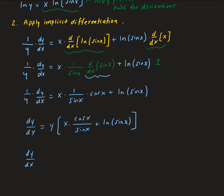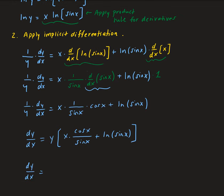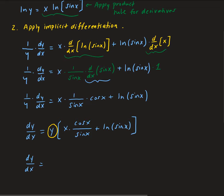We can write our derivative entirely in terms of x by replacing y with the original function. Since y equals sin x to the power x, we replace y with sin x all to the power x.